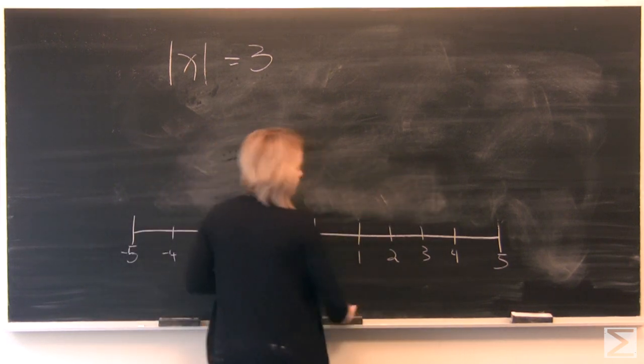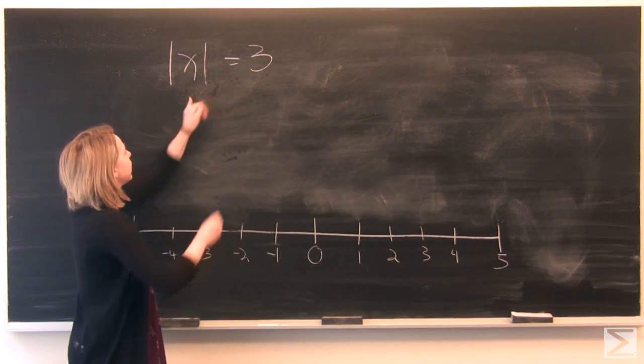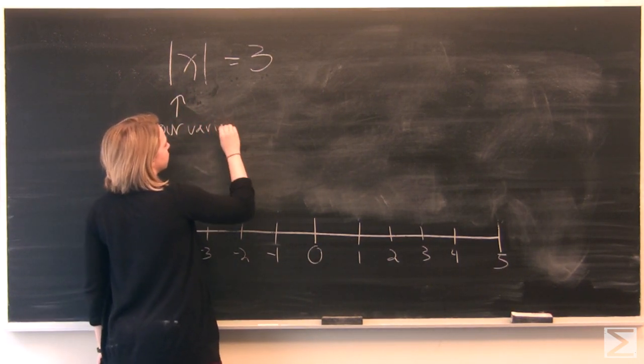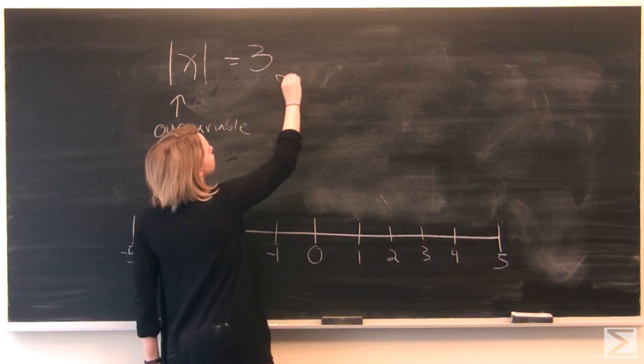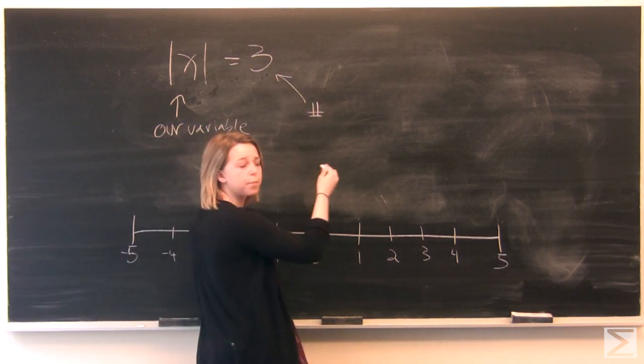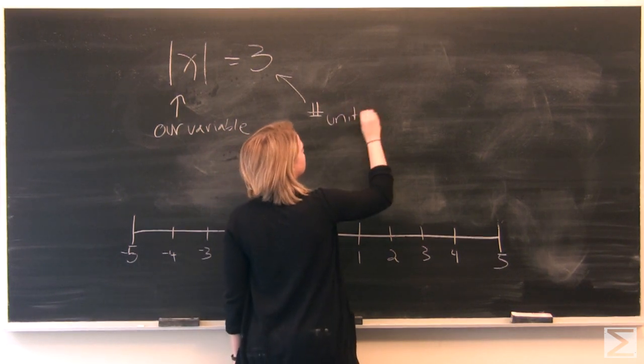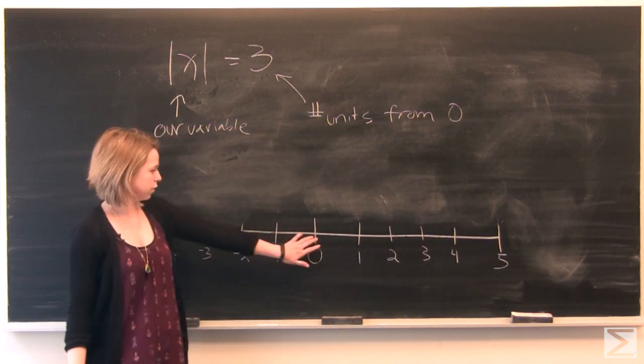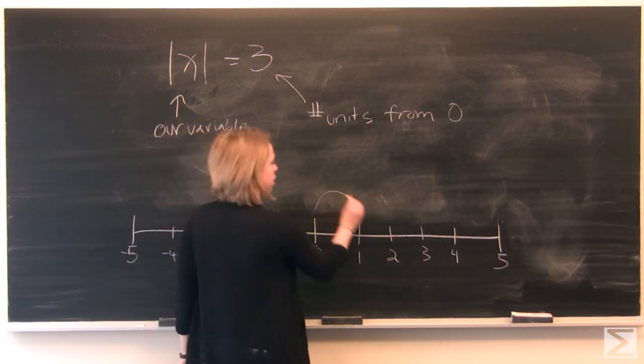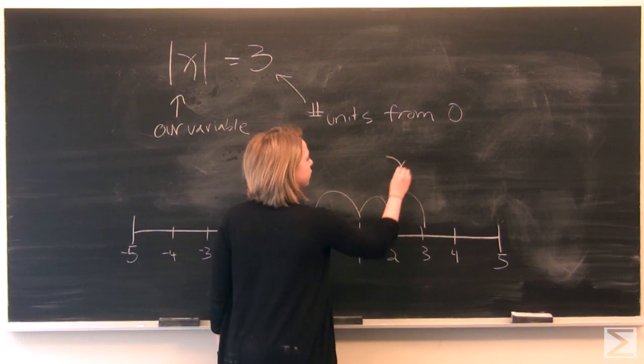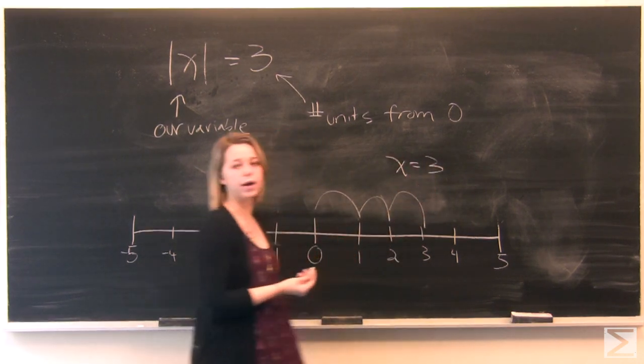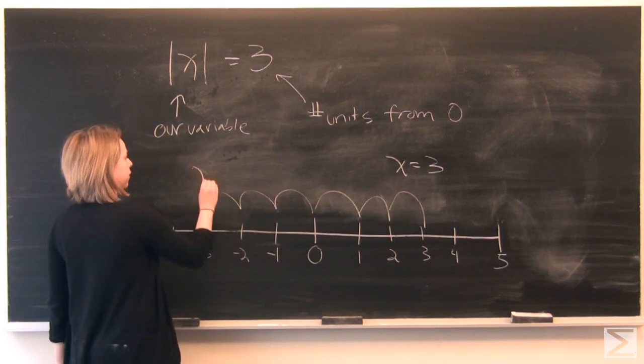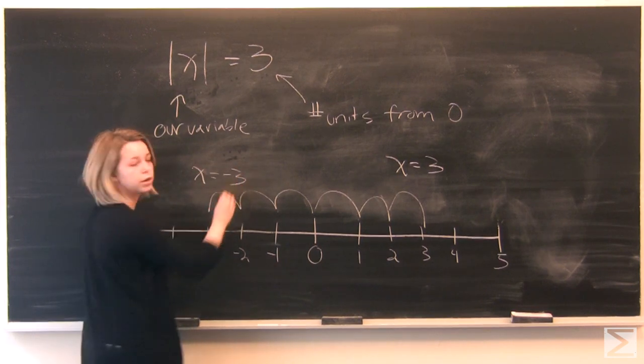But when we're using absolute value, what we're finding is our variable when it's located a certain number of units away from 0 on your number line. So from 0, if we count 1, 2, 3 units, we'll find that x can equal positive 3. But we can also go left from 0, 3 units, and we'll find that x can also be equal to negative 3.